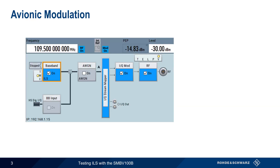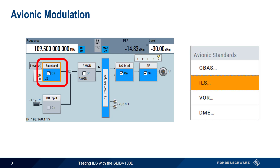To access the different avionics modulation types on the SMBV100B, including ILS, first select the modulation tile, then choose ILS from the Avionics Standards group of available modulation types. Don't forget to enable both the modulation and the RF blocks.